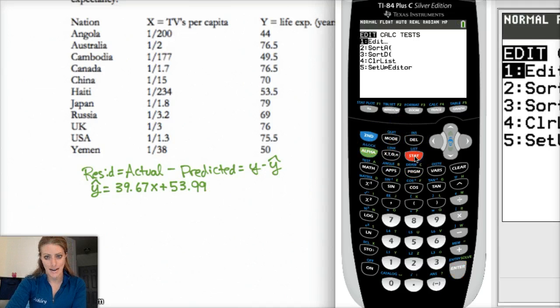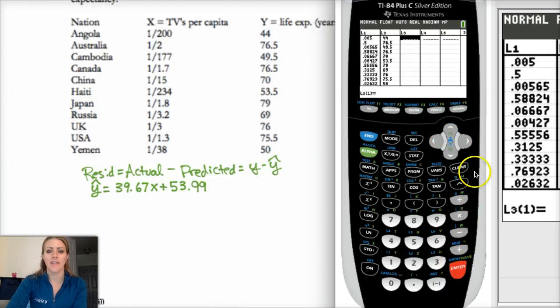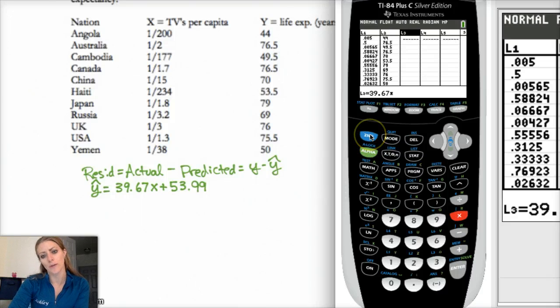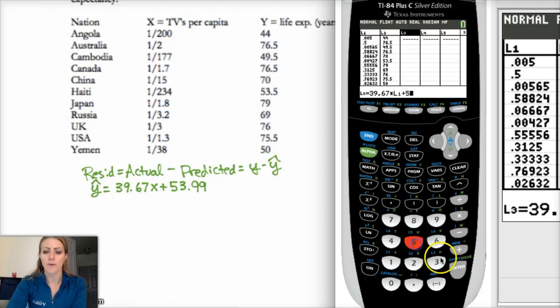Okay, so now I can go back to my stat edit. And then in list three, I need to make my Y hats. So I'm going to go up, highlight L3, hit enter. And what I need to do is 39.67 times X. So I'm going to type in 39.67 times X. And X, whatever the X value is, was list one. So I'm going to do second one. And then I'm adding 53.99 to that.